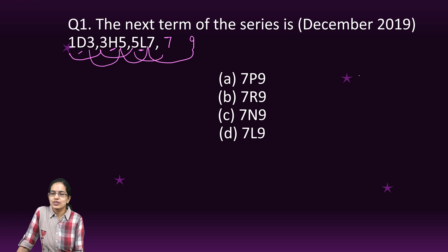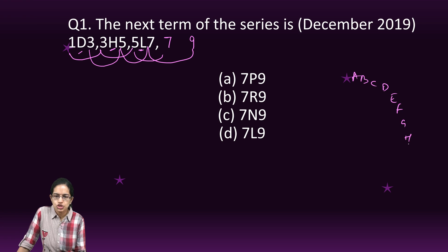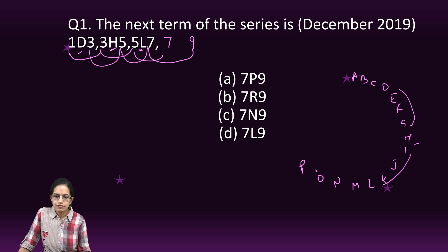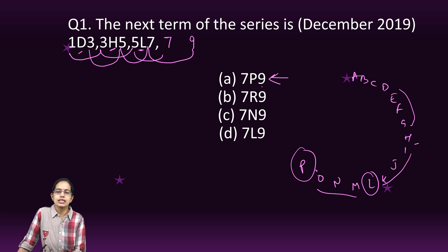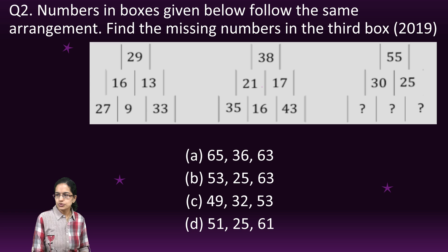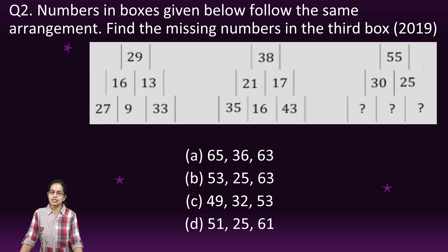The pattern of the letters is A, B, C, D, E, F, G, H — I am leaving 3 letters, and the 4th letter after H is: H, I, J, K, L, M, N, O, P. Again I leave 3 letters and take the 4th letter, and again leave 3 letters and take the 4th letter. So the answer would be 7P9 as the right option.